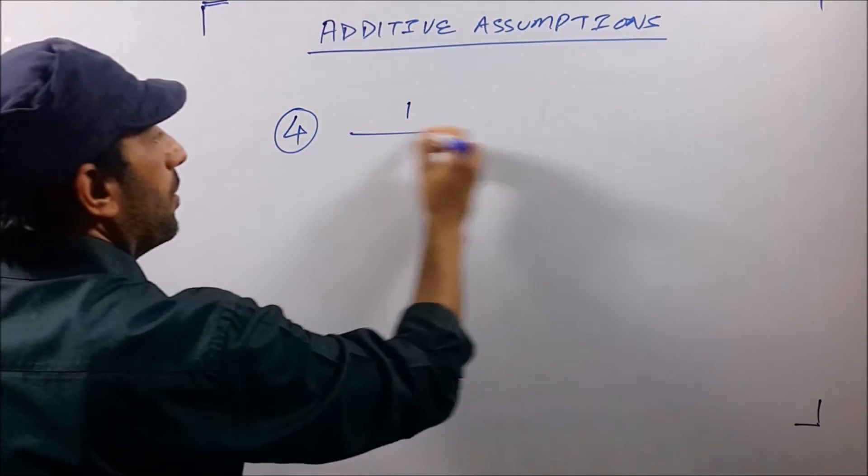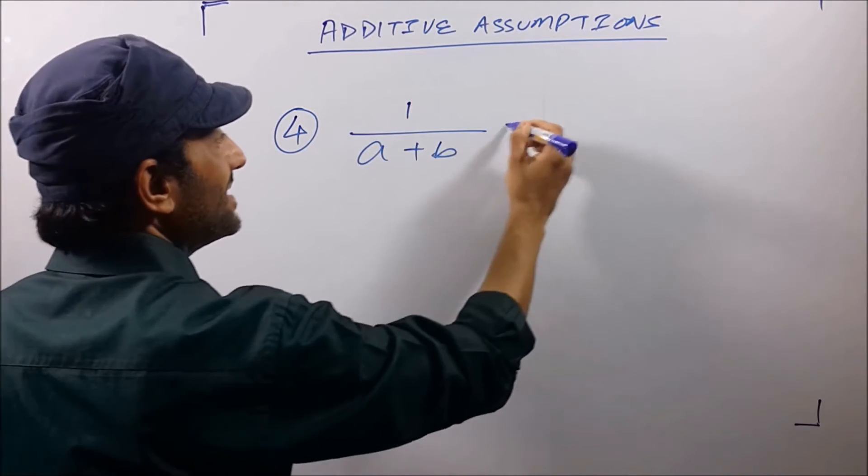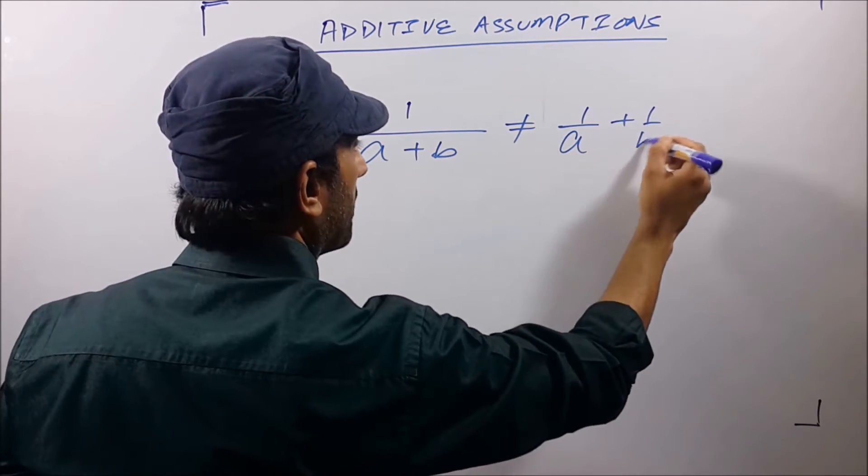Fourth, 1/(a+b) is not equal to 1/a + 1/b.